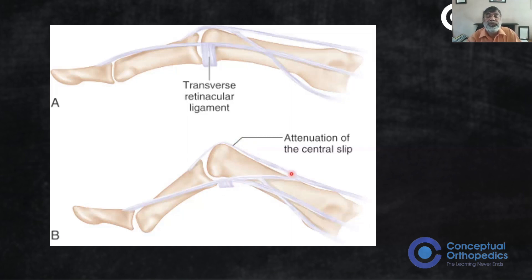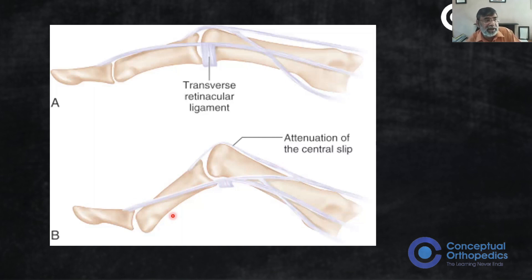Because the extensor pull is not going through the central slip, it now goes all the way through the lateral bands via the intrinsic muscles to the DIPJ, causing hyperextension there. That is the secondary deformity - not a primary rheumatoid effect. That is the classical boutonniere deformity. In the examination, there is a Nalebuff classification, but trainees often get confused by it, especially under exam pressure.